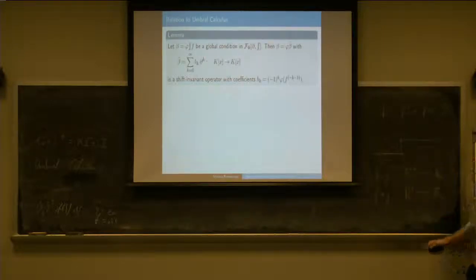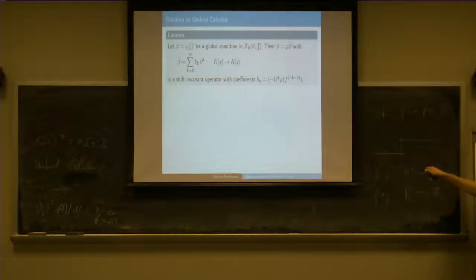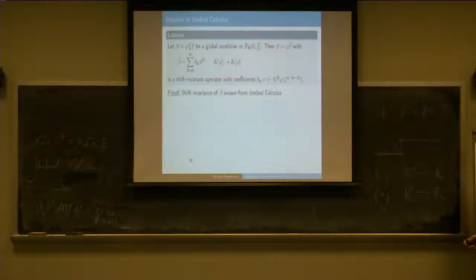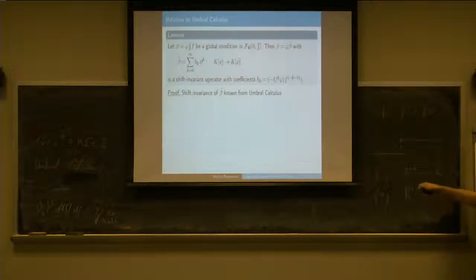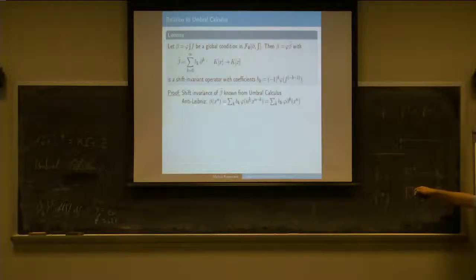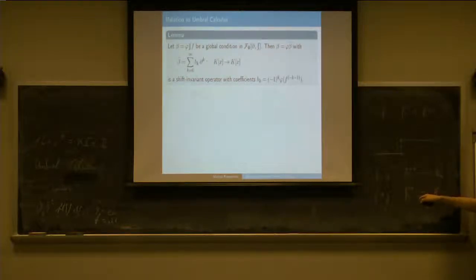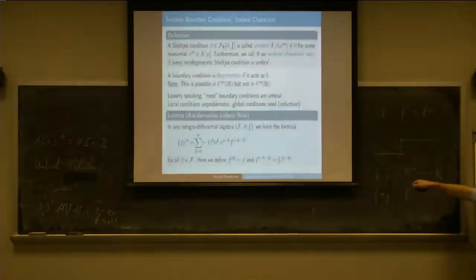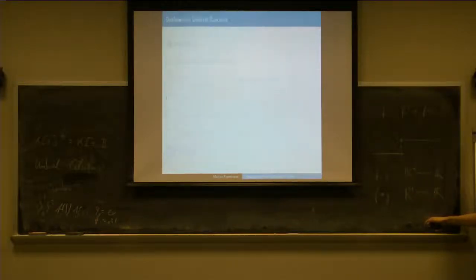So that's a polynomial operator, and the coefficients will be given by this. That's a basic observation in the umbral calculus, and the proof uses the fact that if beta is shift invariant, then we can apply the Leibniz rule shown before. This is a kind of anti-Leibniz rule for the anti-derivative.